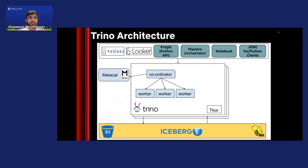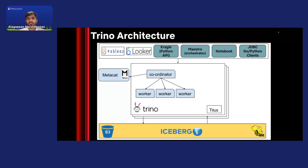Coming to our internal Trino architecture, we have a lot of tools that talk with Trino clusters, like BI tools — Superset, Looker, Tableau — and these tools connect via the Trino JDBC plugin. We also have an internal Python library called Cragle that serves as an abstraction layer for Python users to submit and monitor Trino jobs. Maestro is our workflow orchestrator, as we discussed earlier, and it can run Trino jobs directly or via Genie.